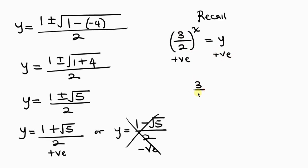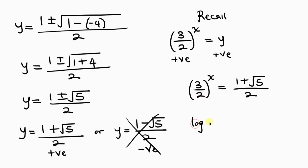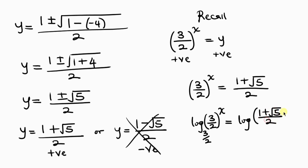So we have 3 over 2, all raised to the x, equal to 1 plus the square root of 5, all over 2. In order to get x, I'm going to introduce logarithms. Since the base here is 3 over 2, the log I introduce will have a base of 3 over 2. So this becomes log base 3 over 2 of 3 over 2 raised to the x, equal to log base 3 over 2 of 1 plus the square root of 5, all over 2.